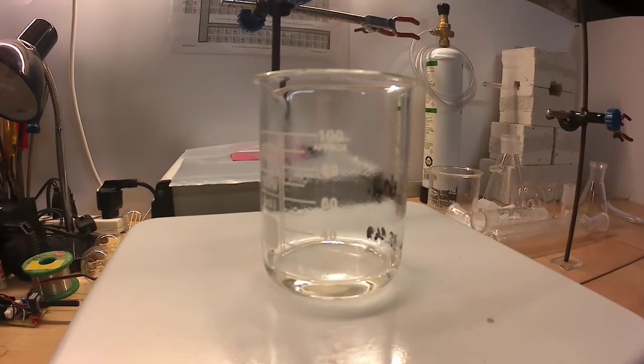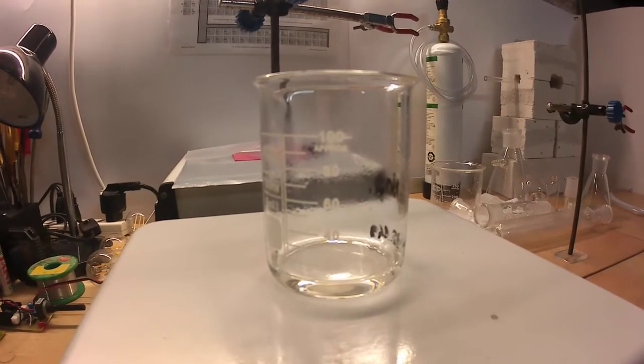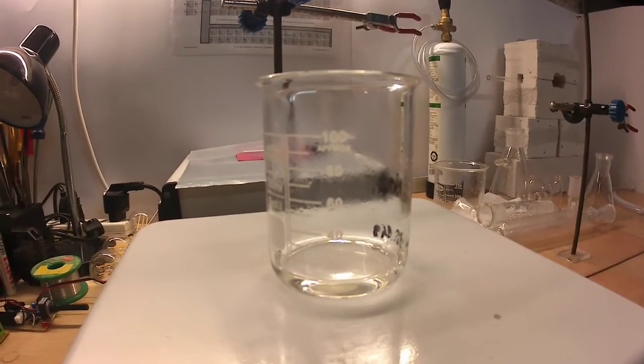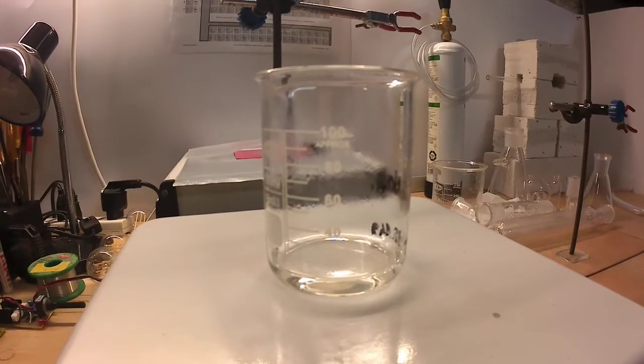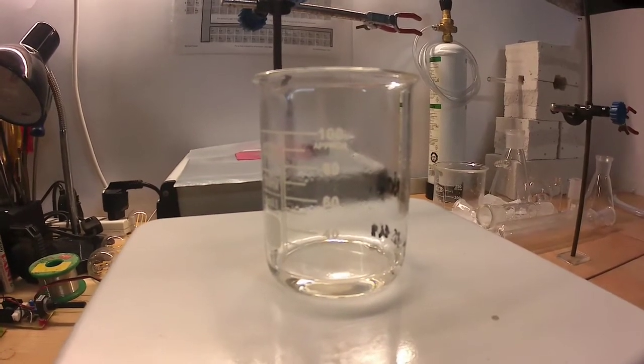At this point, the silver nitrate was transferred to a beaker and put on a hot plate to evaporate the water. Don't set the hot plate temperature too high, silver nitrate is a salt that melts at a low temperature.